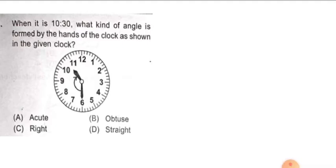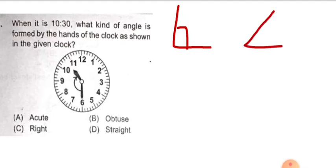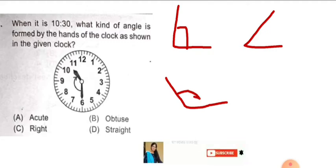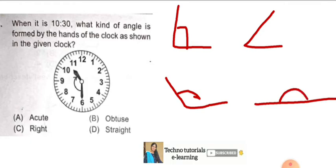Starting the question, I am going to tell you some definitions, like what is right angle? If 90 degree is right angle, less than 90 degree is acute angle, greater than 90 degree is obtuse angle, and if 180 degree, then this is straight angle.